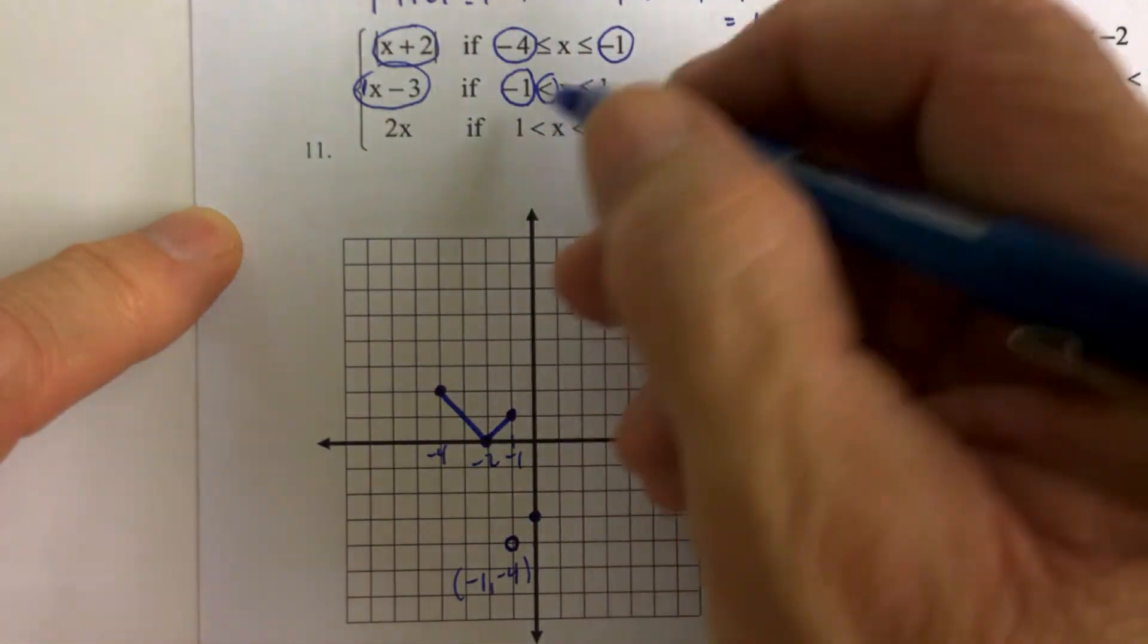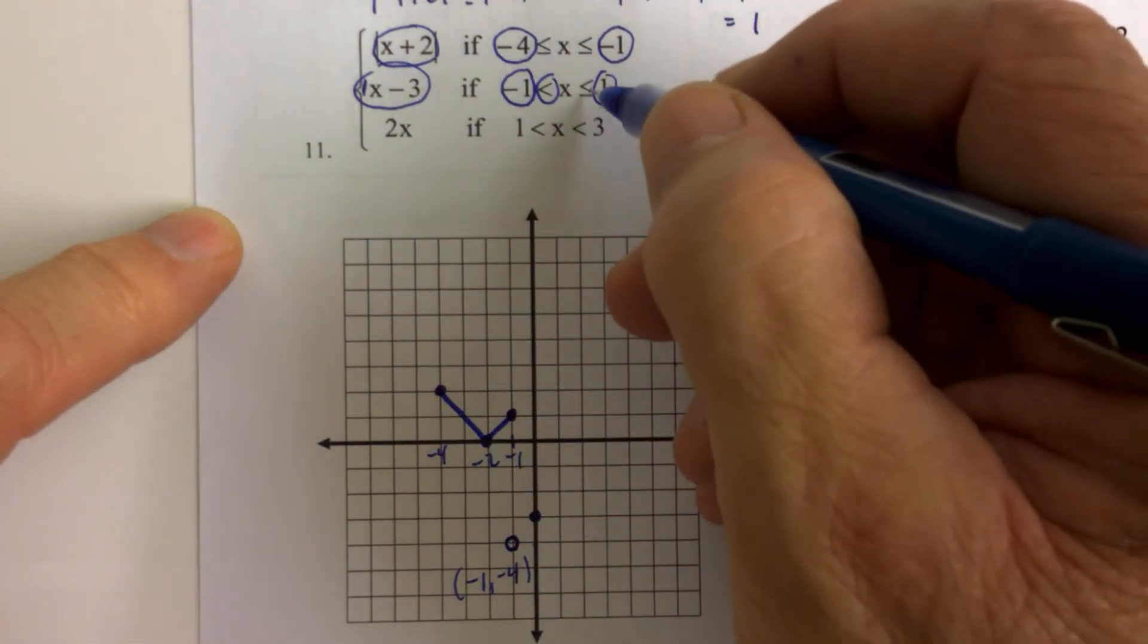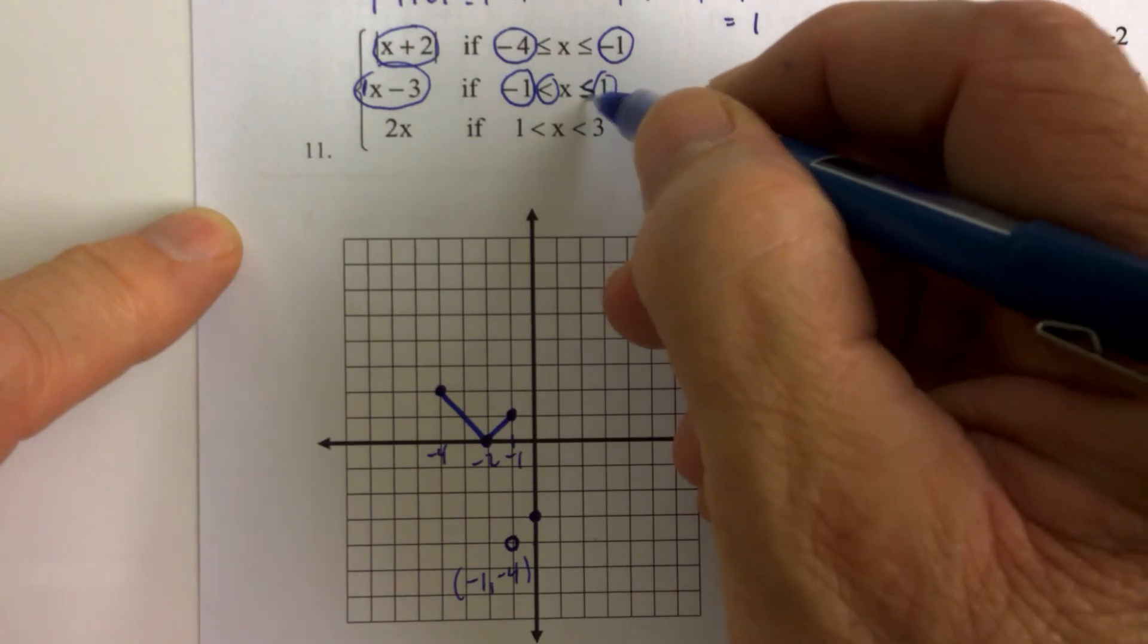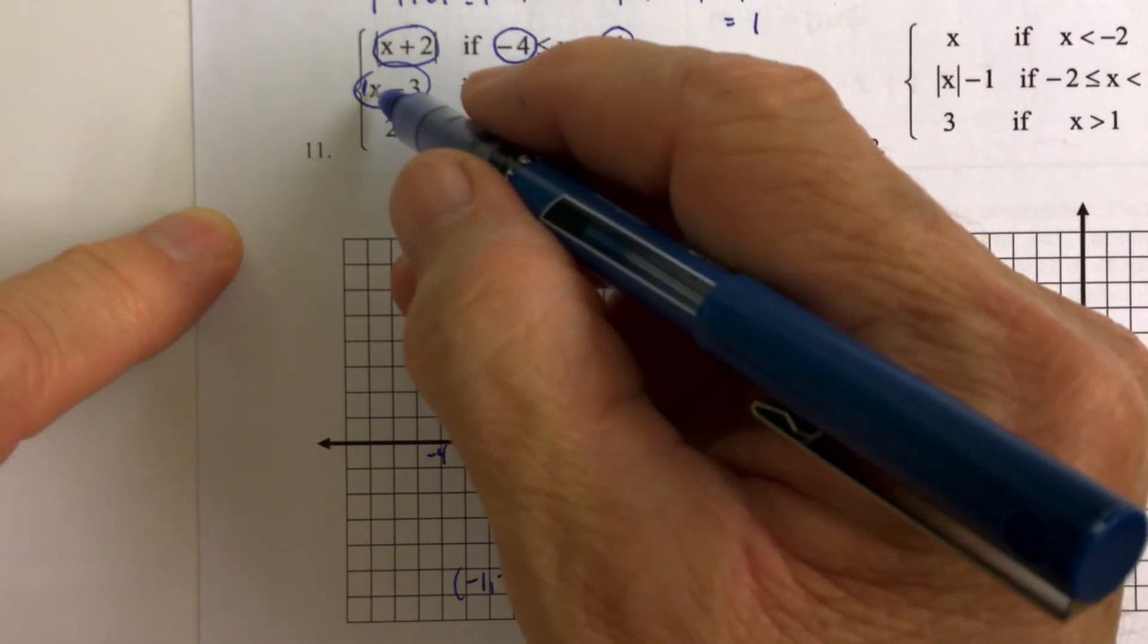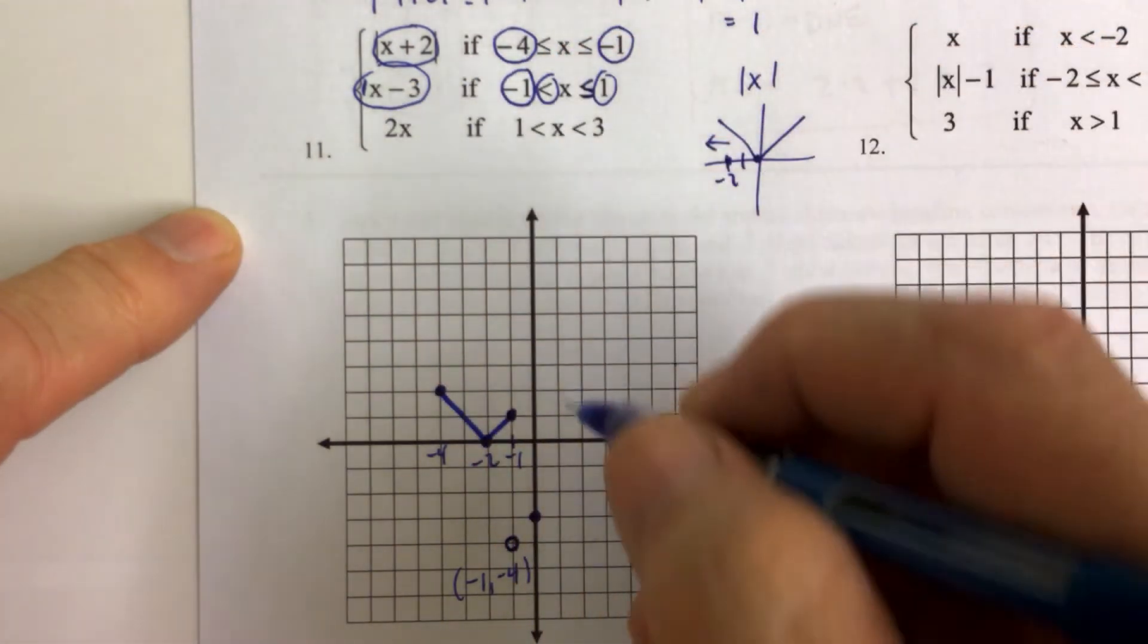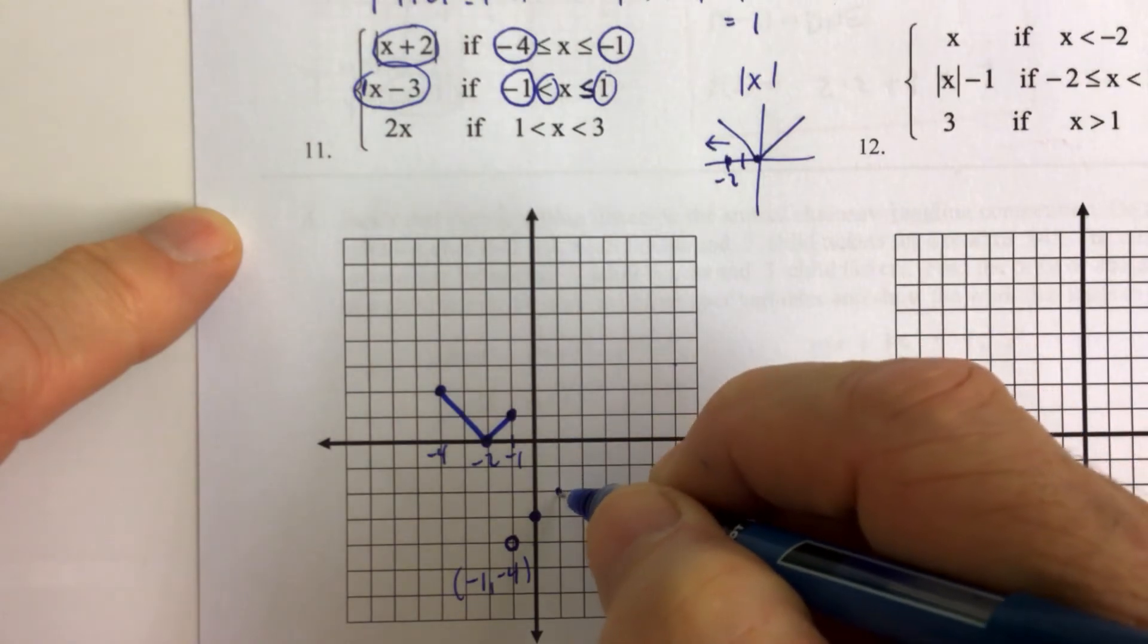Okay. So then when x is equal to positive 1, we have a dot because of this less than or equal to. So when x is positive 1, we get 1 minus 2 is negative 2. And so 1 minus 2, there's a dot.